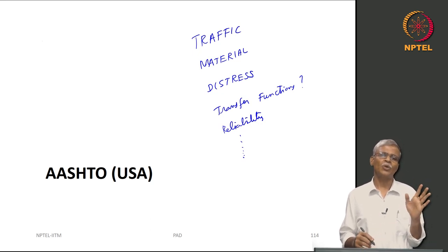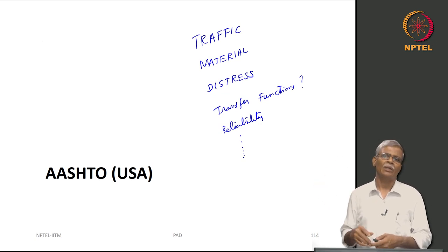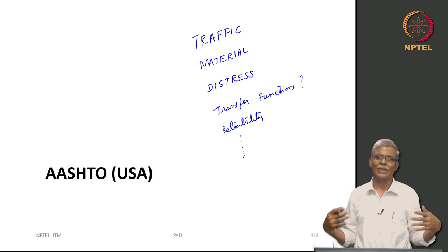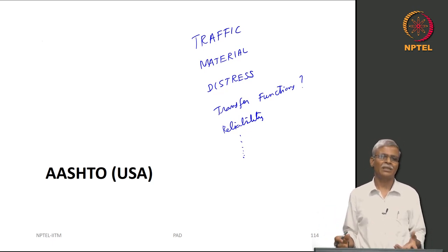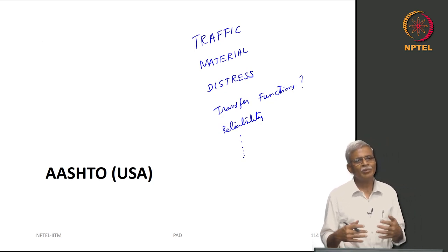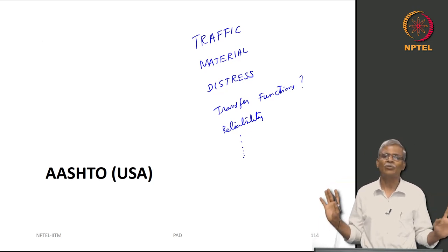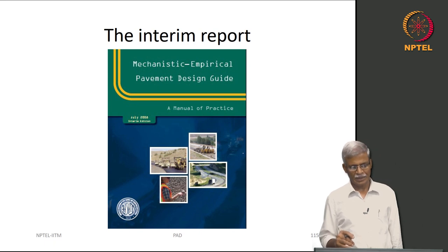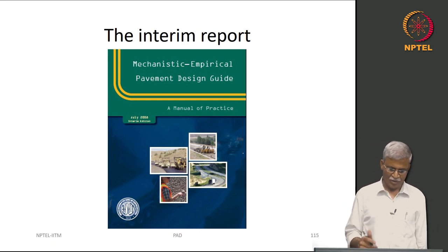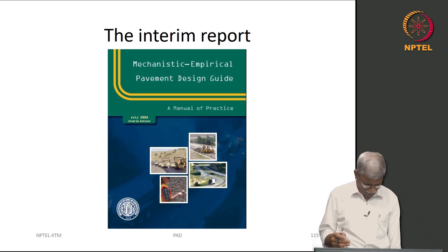Many practitioners will say that the recent version of AASHTO is an overkill because you are looking at more than 150 parameters that need to be input into the system and analysis has to be done. But from the student's perspective, you need a comprehensive background about the most sophisticated pavement design method available. This is the interim report — the Mechanistic Empirical Pavement Design Guide, known as the MEPDG and Manual of Practice, interim edition July 2008. All my discussions are based on this version.